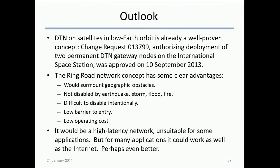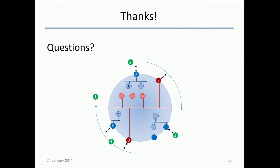The concept has pretty clear advantages as an adjunct to the way the Internet works today. It surmounts geographical obstacles, is not disabled by earthquakes, floods, or fires, and is actually difficult to disable intentionally — it's difficult to shoot down a satellite, especially one this small. There's a low barrier to entry in building the infrastructure, low operating cost over time. It would make it possible to offer Internet-like service to a vastly greater fraction of the human population than we can offer right now. It would be a high-latency network, unsuitable for some applications, but for a lot of applications it would work as well as the Internet, and in some cases even better.